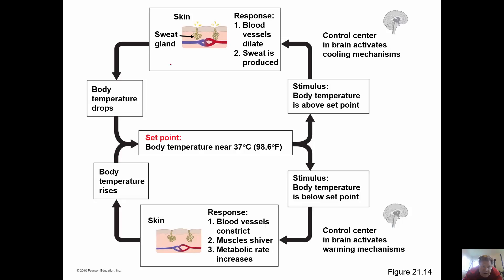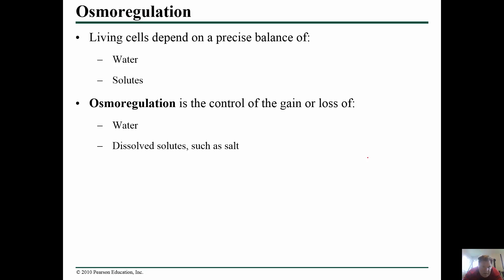We have a set point, and when you get a little too hot you start to cool off the body — for example by sweating — your body temperature drops and then you can stop doing that. For heating you do kind of the opposite. There is control that happens and you should be aware of this control.